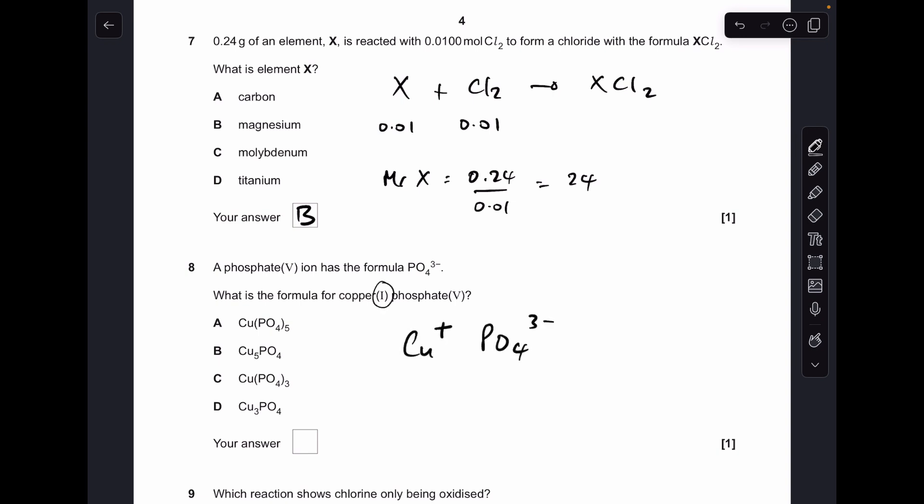Number eight, what's the formula for copper one phosphate five? So copper one means copper one plus, we've been given the phosphate five ion formula. So what ratio of those ions is going to give us the compound? It's going to be option D, Cu3PO4.